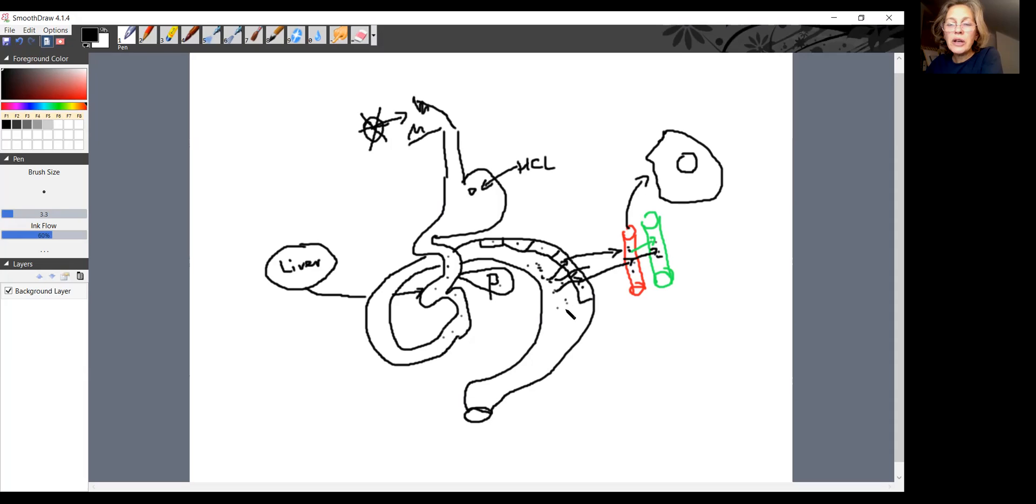Particles of the food that are not broken down get excreted out of the digestive tract. You can see that the whole purpose of the digestive tract: take food in, break it down, absorb, and whatever is not broken down and not absorbed gets excreted.